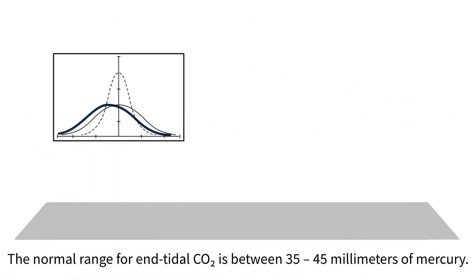The normal range for end-tidal CO2 is between 35 and 45 millimeters of mercury.